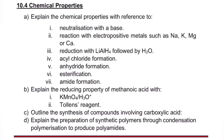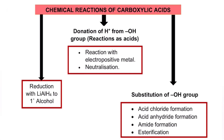Assalamualaikum, hi guys. In this video we are going to continue with the chemical properties of carboxylic acid. I'm going to separate the reactions of carboxylic acid into two parts, so let's focus on the first part. The reactions of carboxylic acid have three categories: the first one is reduction, the second one is where carboxylic acid reacts as an acid donating a proton from the OH group, and the last one is the substitution of the OH group.